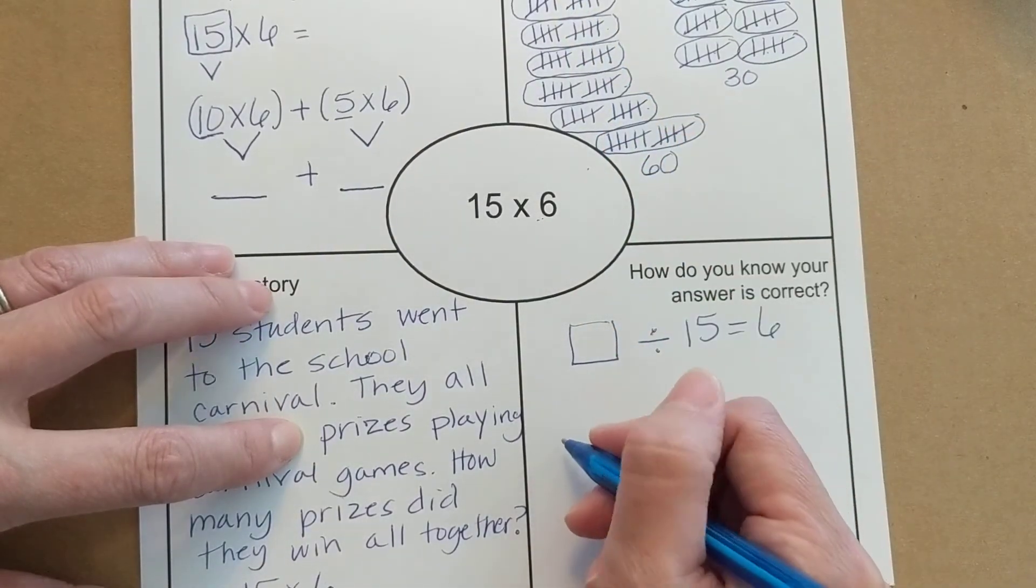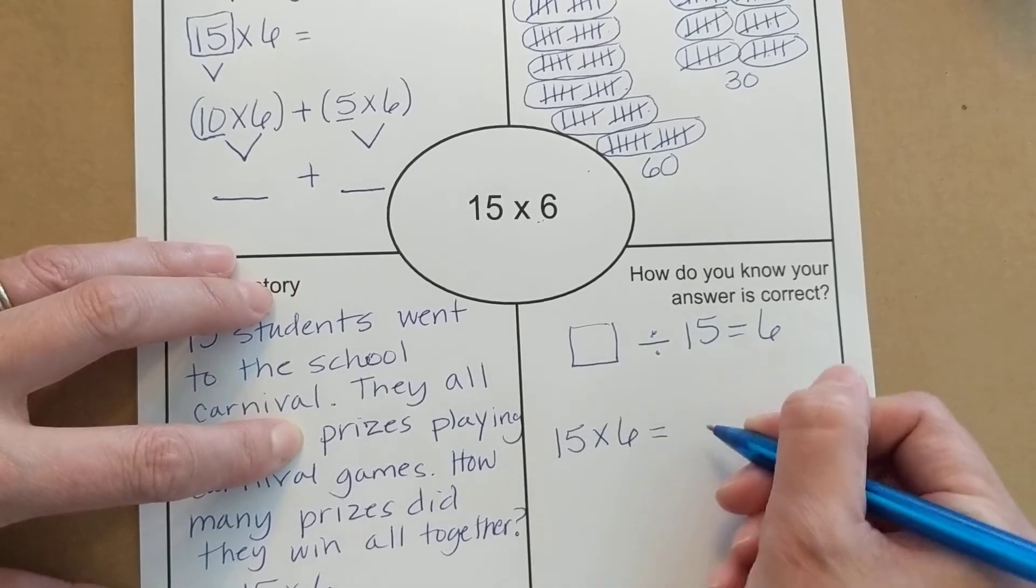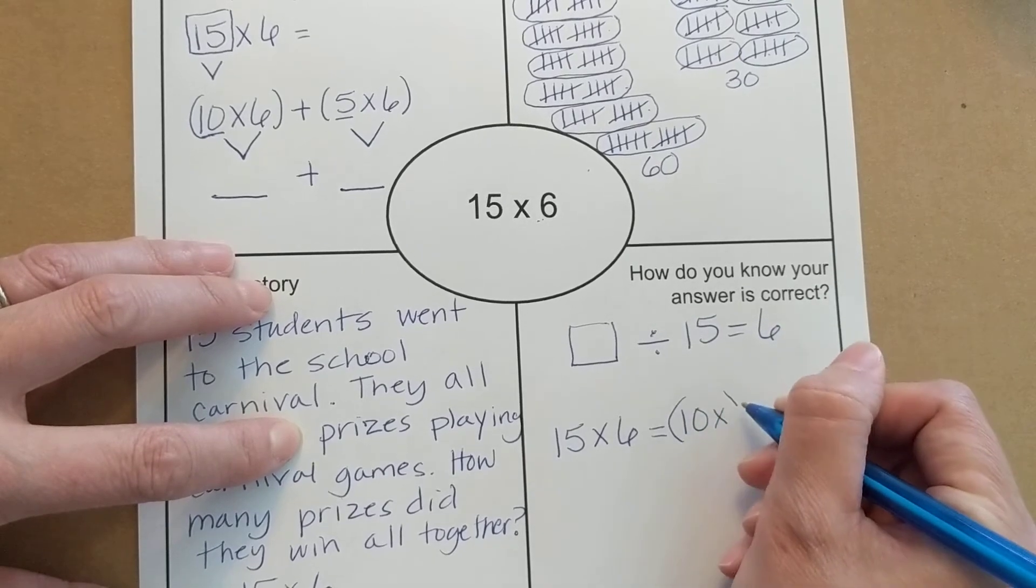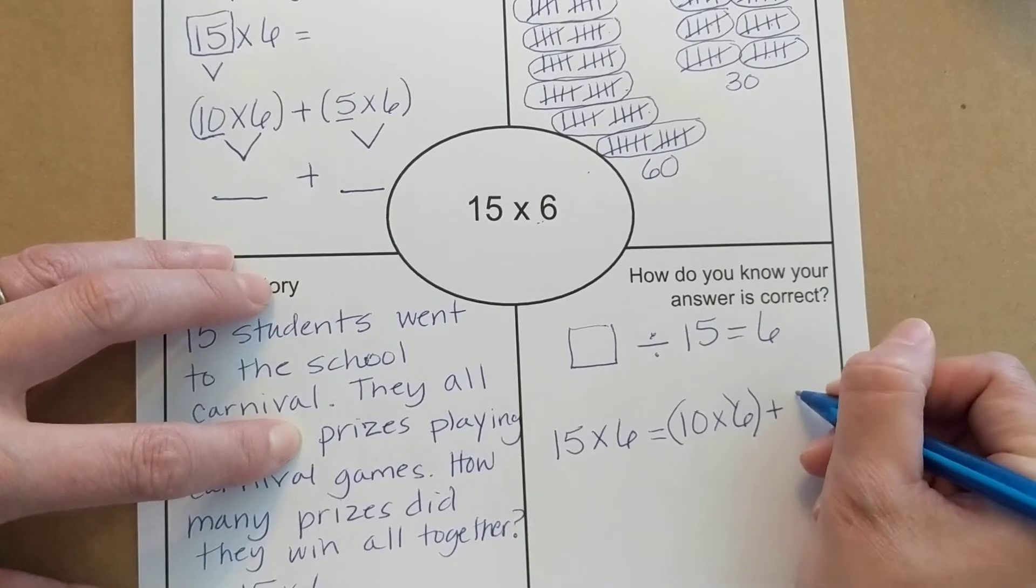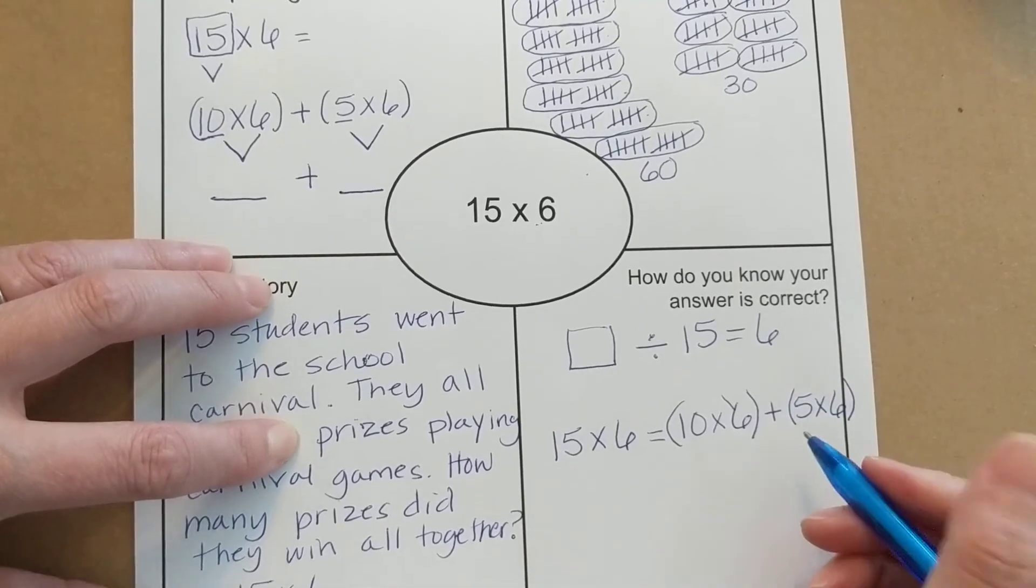You could check your work through a fact family and you can check your work by, let's write that problem out again, 15 times 6 equals, I think I forgot to put those parentheses up in the top there I will add those, 10 times 6 and 5 times 6.